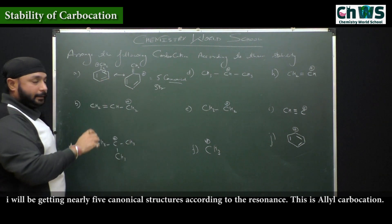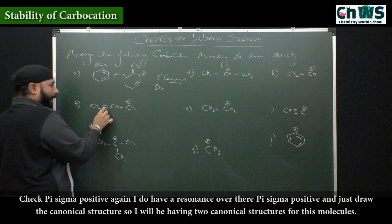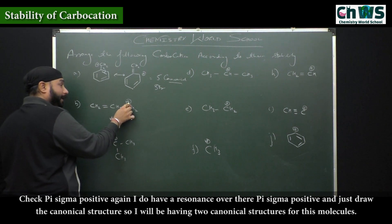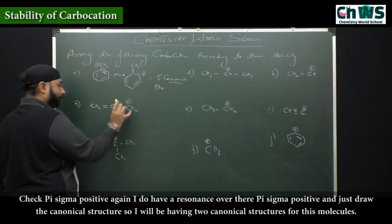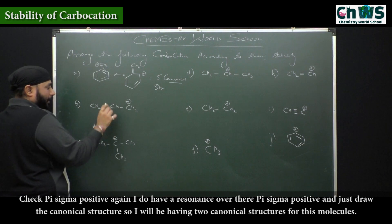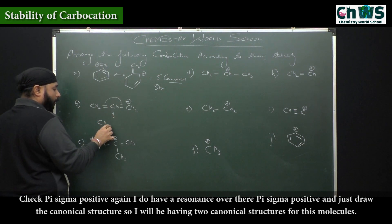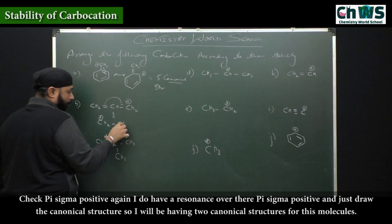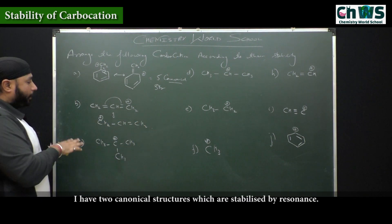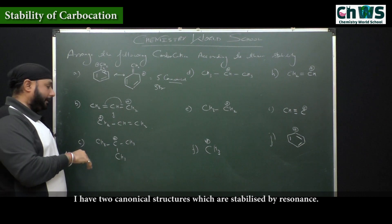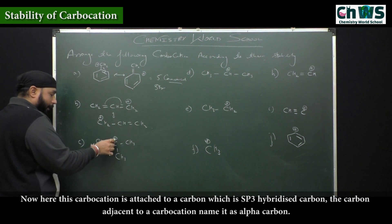This is the allyl carbocation. Check — pi-sigma-positive, again I do have resonance. Pi-sigma-positive — just draw the canonical structure, so I'll be having two canonical structures for this molecule which are stabilized by resonance.